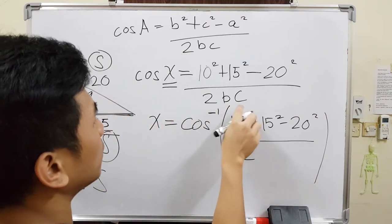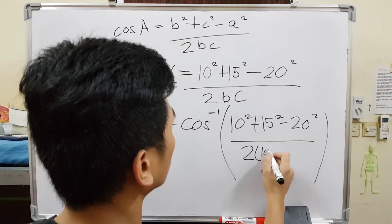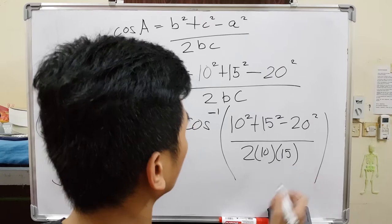All over 2. I'm sorry guys, I did not change the B and C here. But B and C of course are the same as this. So 10. So times 10. Times 15.